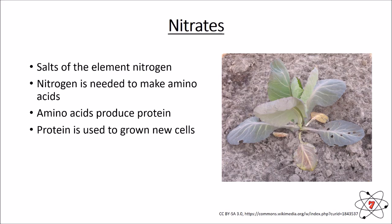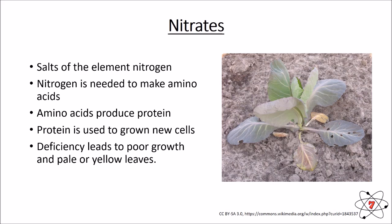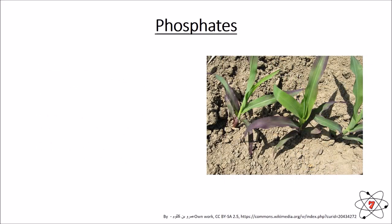The plant is going to use amino acids to make protein, and protein is required to grow new cells. So without enough nitrogen, you're not going to have enough protein and a plant is not going to grow and it's not going to be very healthy. The picture we can see here is a classic example of a plant that is nitrogen deficient — it has poor growth, it's very small, the leaves are small, and they're pale or yellow.